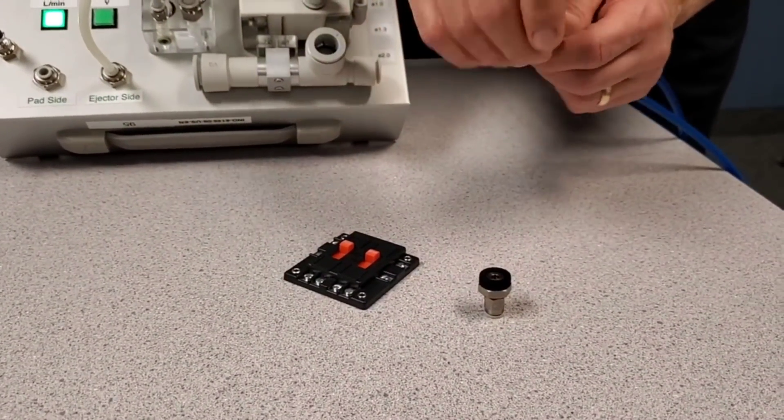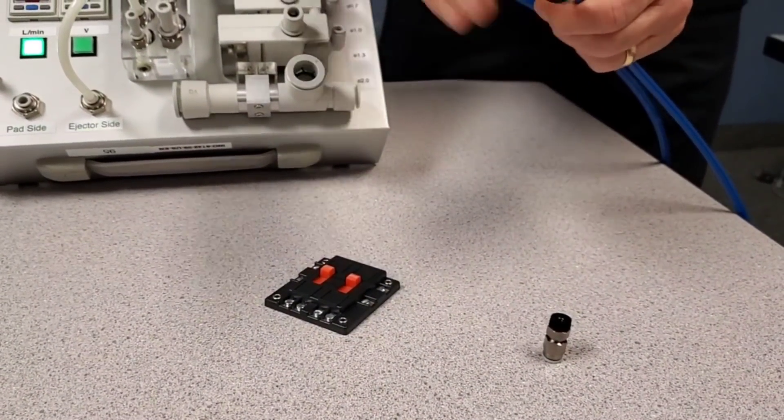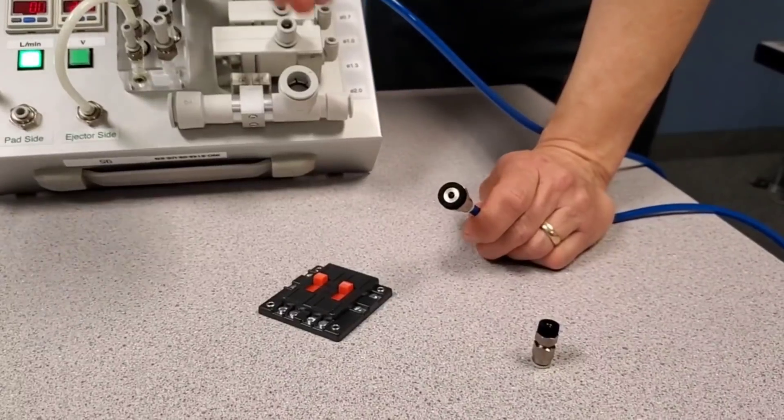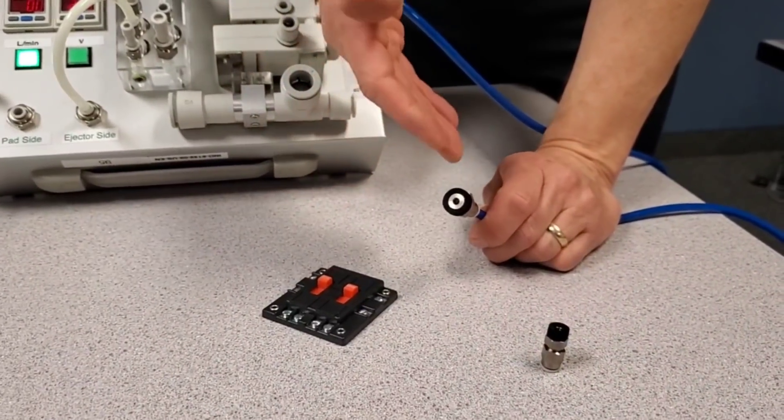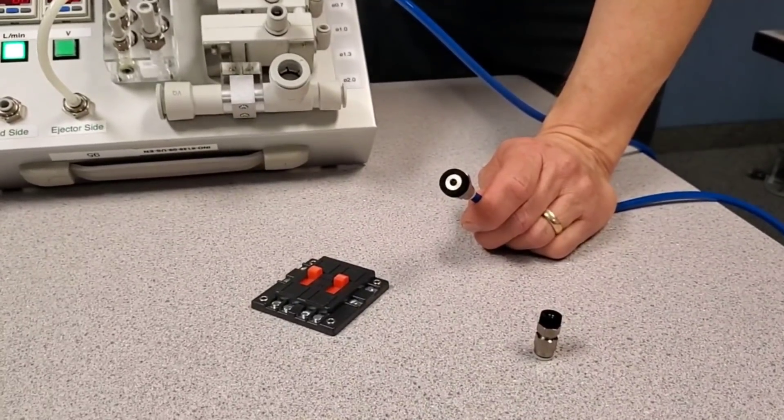So it wasn't quite strong enough to hold. Let's try the 15 millimeter. This could also be done on site. If you had a product and you needed to verify what cup works best, give SMC a call. Because here's the 15 millimeter.